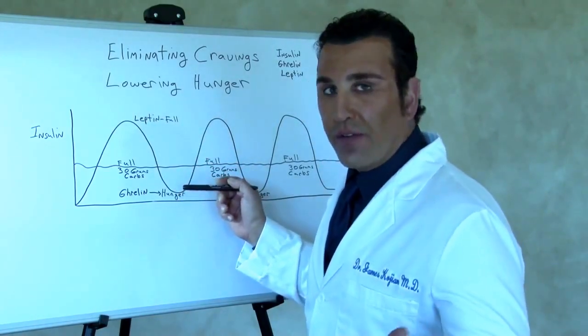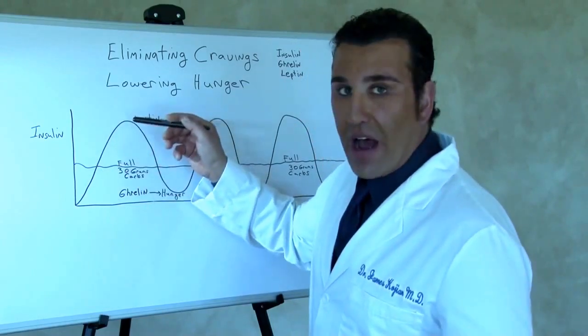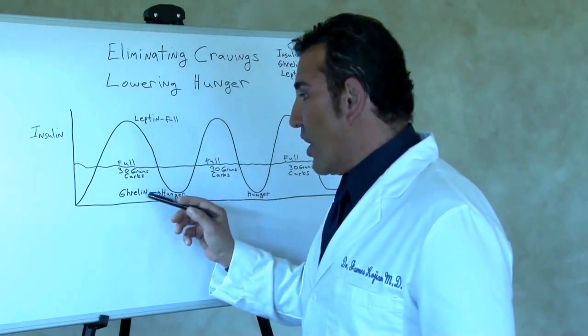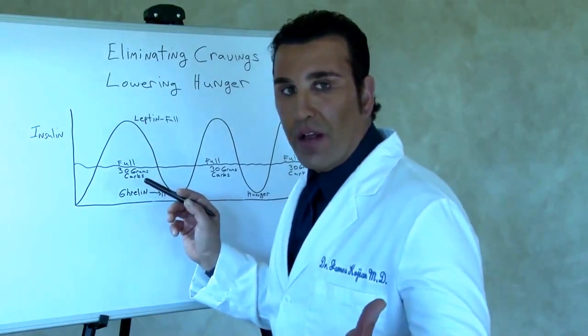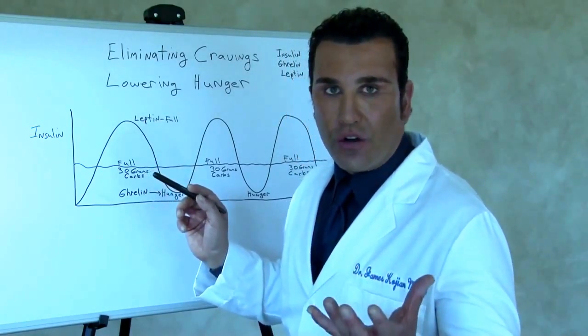Now when the insulin level comes down very low, because it went up very high, the hormone of hunger, ghrelin, is secreted. The brain secretes ghrelin and it drives your hunger.